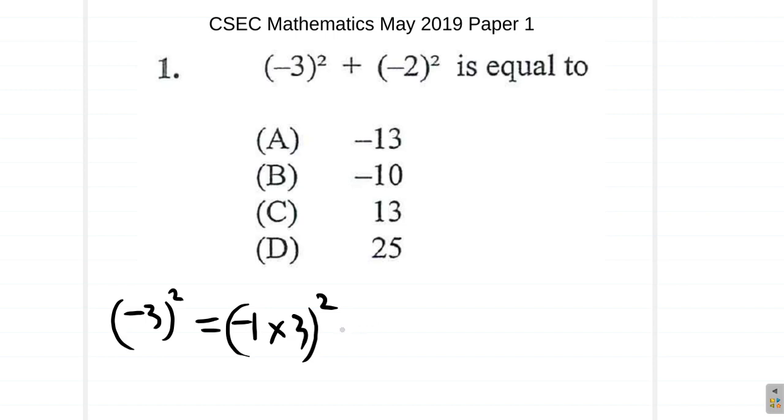Yeah. Now, this is the same as negative 1 times 3 times negative 1 times 3. You notice you have negative 1 times negative 1 times 3 times 3, which gives you what?